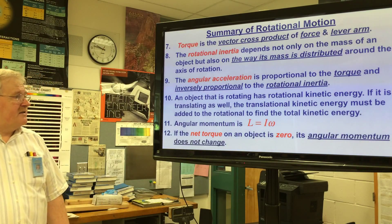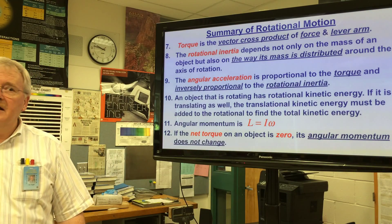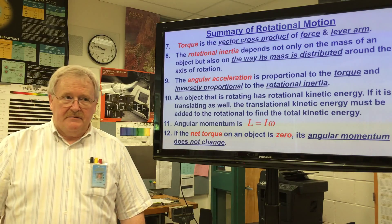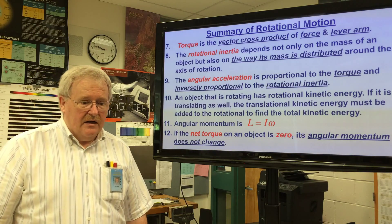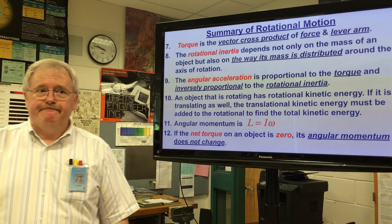Angular momentum L is equal to the moment of inertia times the angular velocity. If the net torque on an object is zero, its angular momentum does not change. In other words, angular momentum is conserved in that case, and that's the end of this unit on rotational motion. Any questions?